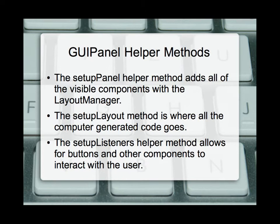Our next helper method is setup layout, and this is one we do not write ourselves. Rather, this is where we place the auto-generated code from the window builder, putting it in a clean organized spot. This is where all of our layout dot set constraints method calls are placed. Finally, we have our setup listeners method. This is where we create and add all of the interaction used to do stuff with the user — so when we click a button, something happens rather than it being a useless button. The setup listeners method will contain all that information, clean and organized, so we can keep our code looking good throughout the application.